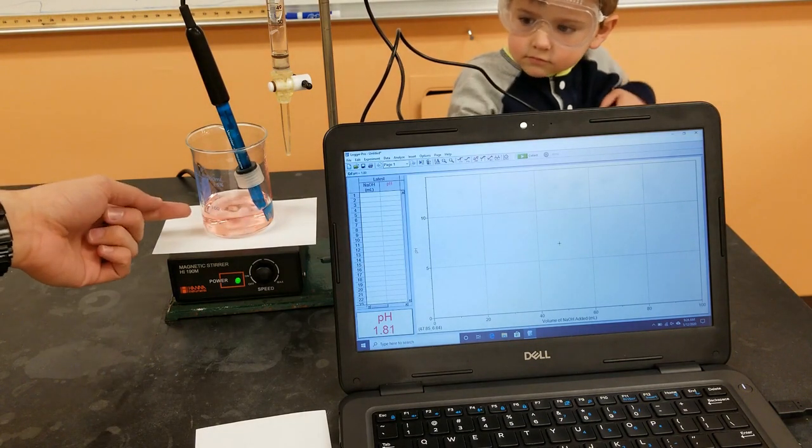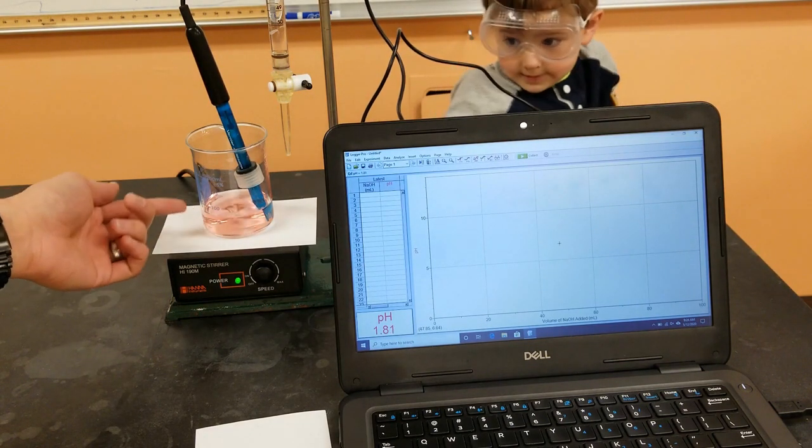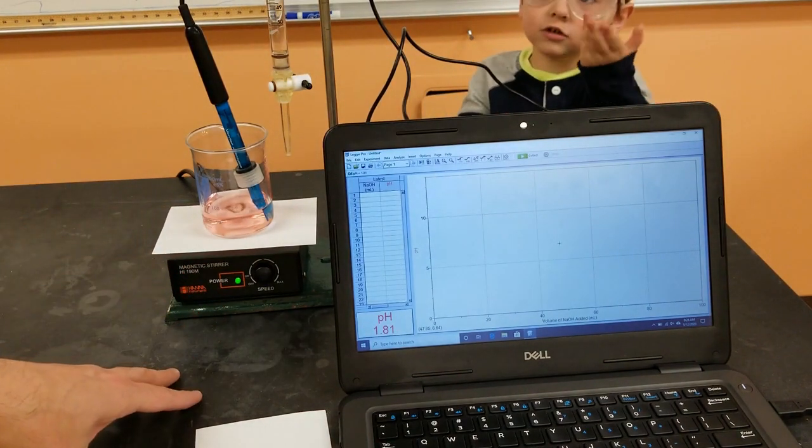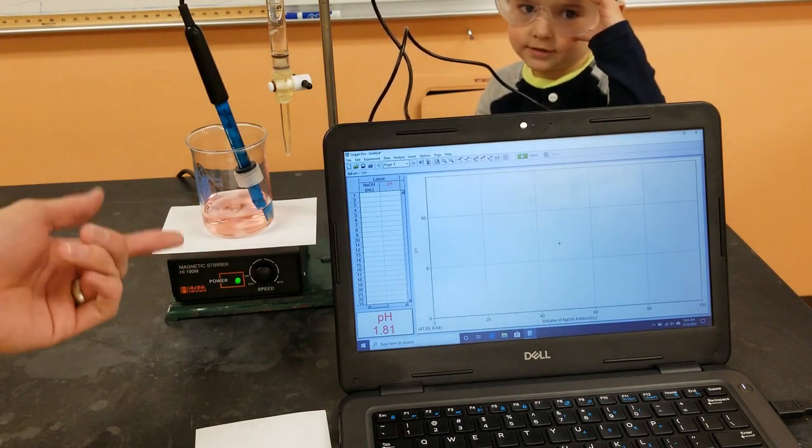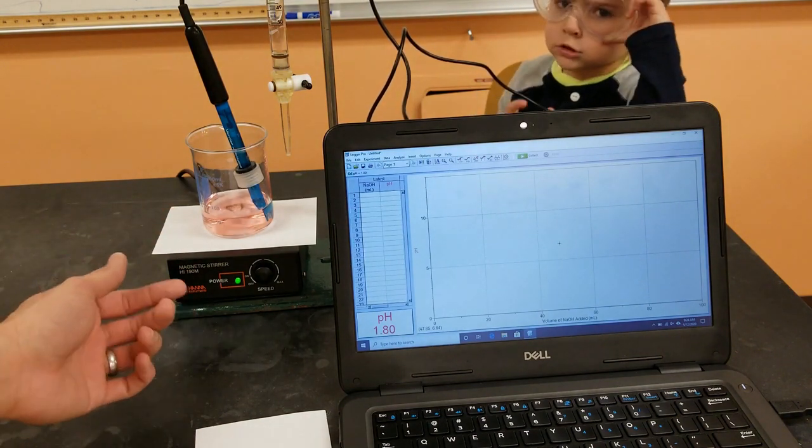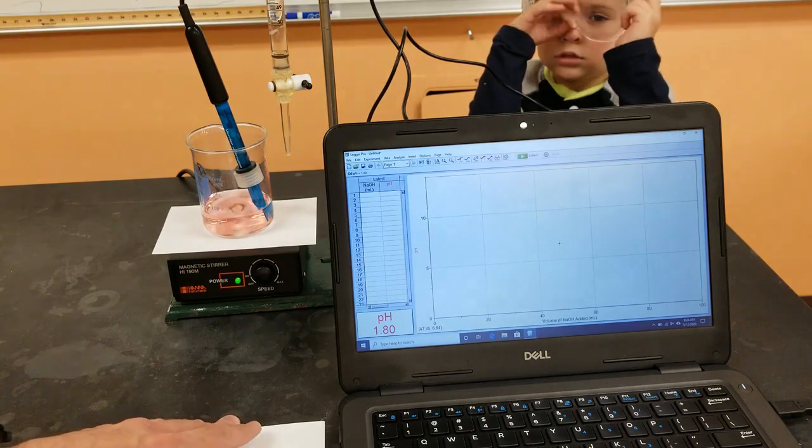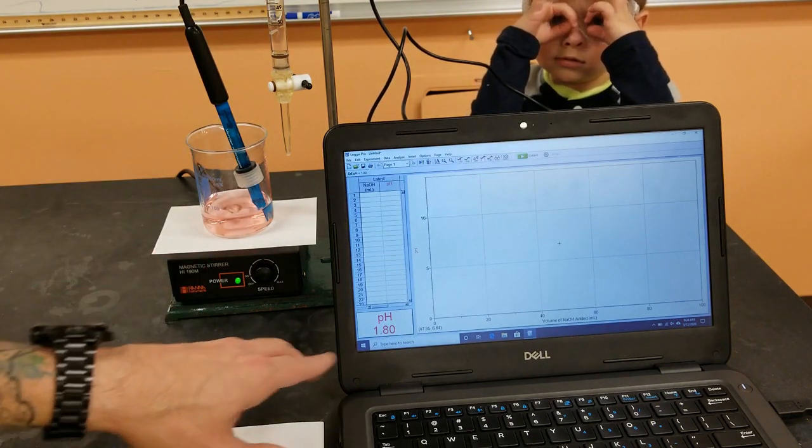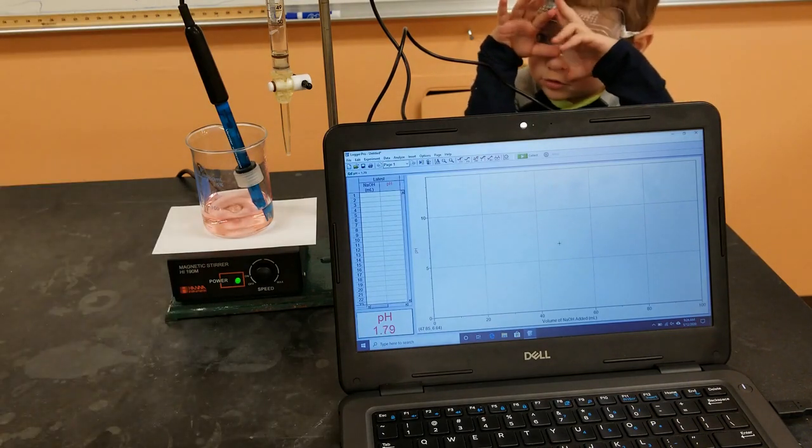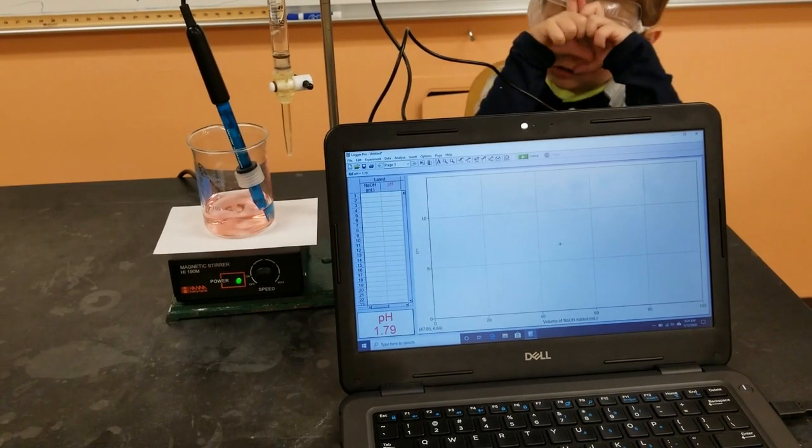Okay, so we've added indicator. It turned red. We added universal indicator, so red indicates very acidic. And then the first pH probe I was using was reading a pH around 9, so it was not calibrated. And so I just switched it out with another one, and it's reading a pH of 1.80. I made sure that our volume today is going to start at zero on the base burette.